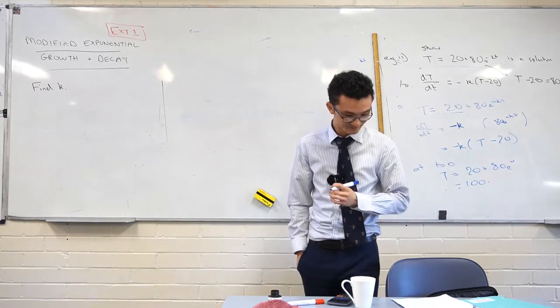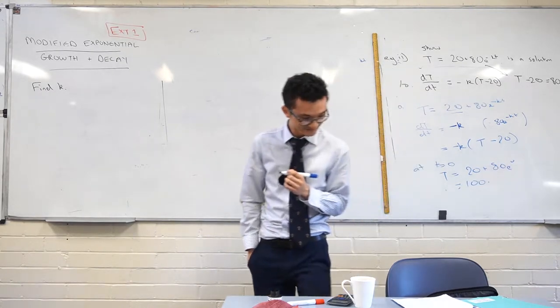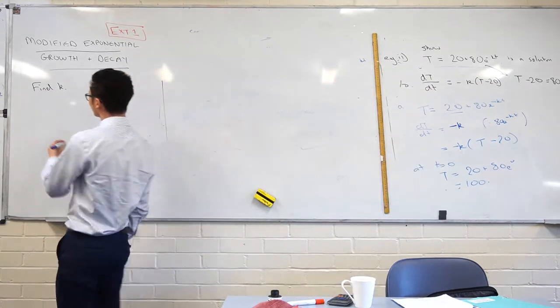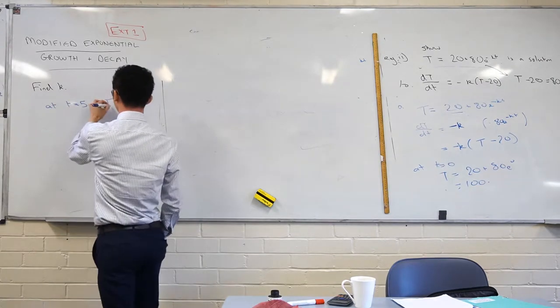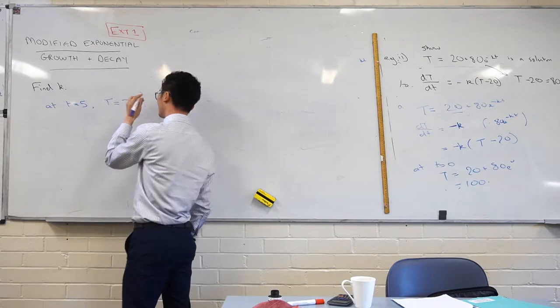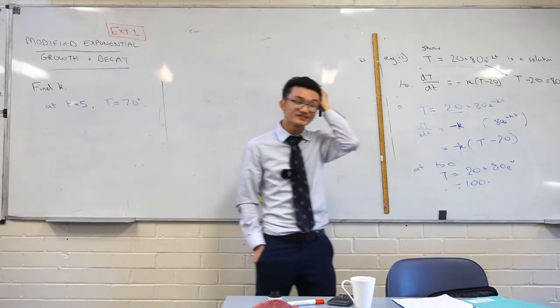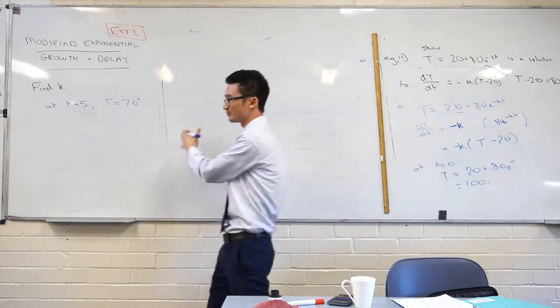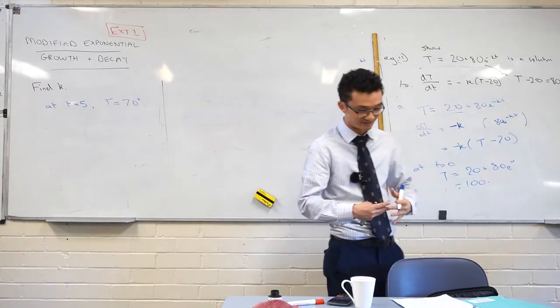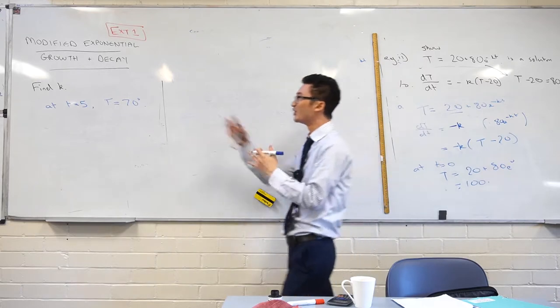So we've already tried to substitute the initial. The initial will help you verify, right? But it's not going to help you find k because what happens to k here, it goes away, right? So it's not helpful. What can we do? There's another one in the question. What did they tell me? Five minutes later. So five minutes later, or t is equal to five, capital T is 70 degrees. So they can disguise information in certain ways.